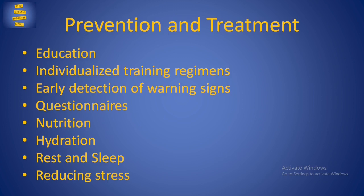Hydration: Another factor which is often overlooked is adequate hydration. Dehydration can increase the viscosity of the blood, leading to reduced blood circulation in the muscle tissue. Reduced blood circulation of the muscle can contribute to impairment of muscle repair and regeneration.